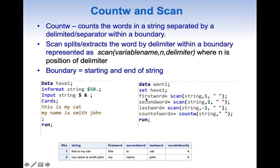So we are creating a new variable: first_word equal to SCAN, then the variable name, followed by comma one, then the delimiter. Whenever we give a positive number it starts from the beginning of the boundary — that is from the first delimiter — and it splits the first word until we see the first delimiter. So this will give us the first word.